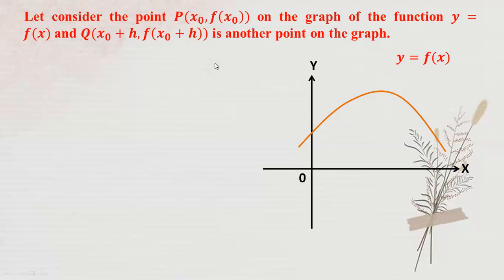Let's look at x₀. Now, if h is not zero, the point P has coordinates where x equals x₀. So P is the point at x₀. What is x₀? P is the point at x₀, for x not zero.